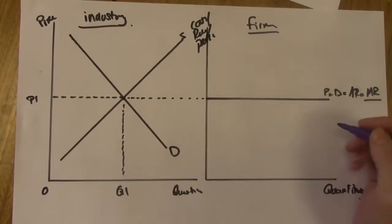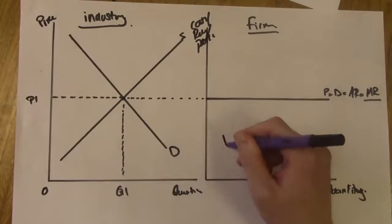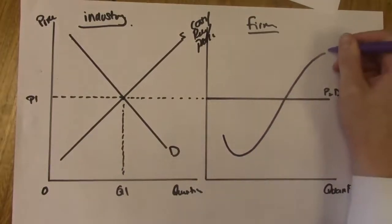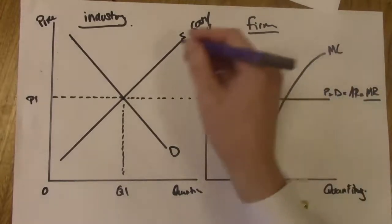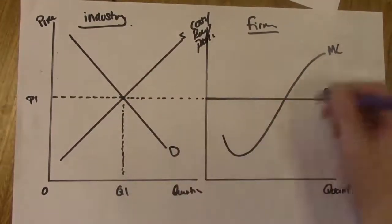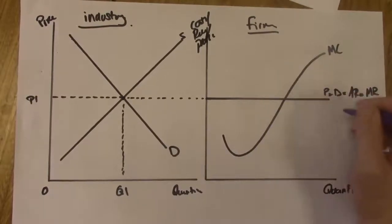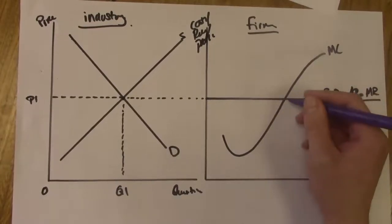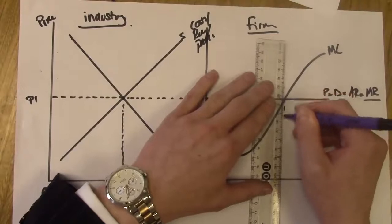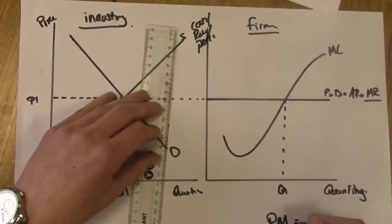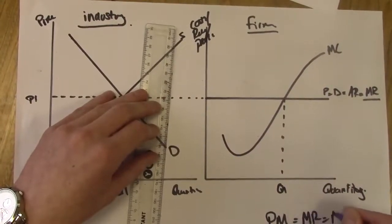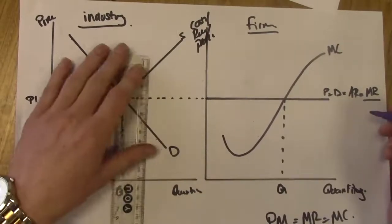Now we can add more to the diagram. First, add the MC curve, which is tick-shaped. As a hint for the exam: every curve you draw, label it straight away — supply curve, demand curve, MC curve, label each one as you finish it. You can already see where MR equals MC — that's our profit maximization point. Draw a dash line down and label it Q1 — profit maximization occurs when marginal revenue equals marginal cost.